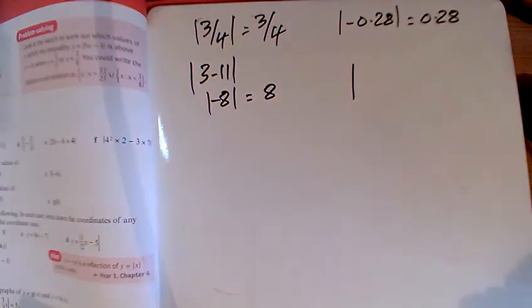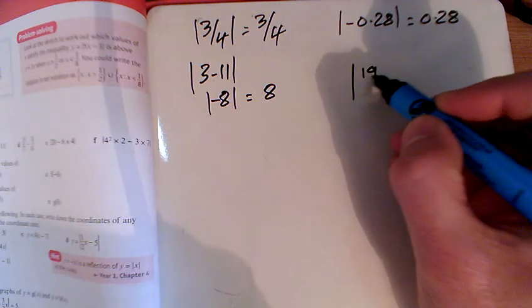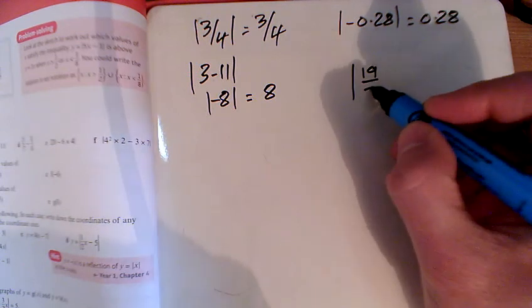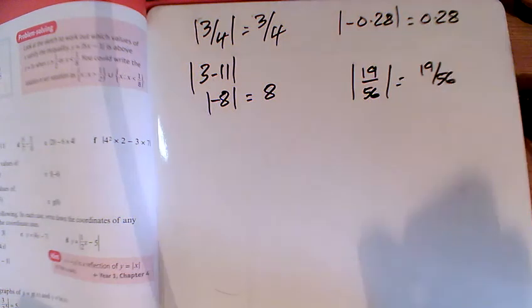For part D, just tap those fractions in the calculator, I've got 40 take away 21, I've got 19.56 there, positive, so the modulus of that is 19.56.